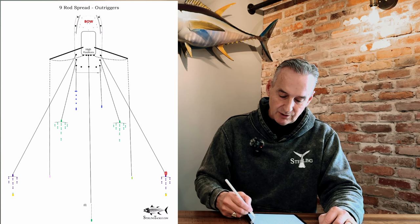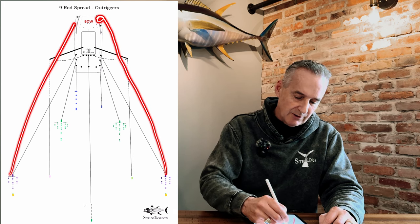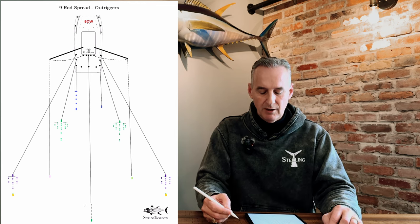If you do have a center console, definitely use your bow rod holders for your widest trackers. That is going to be a big help to you.